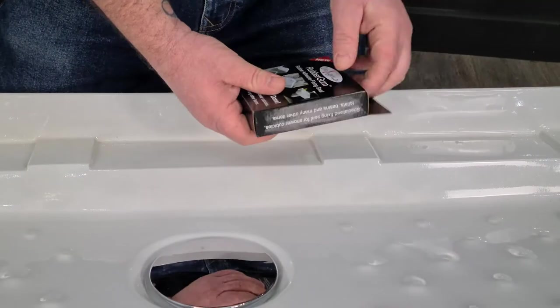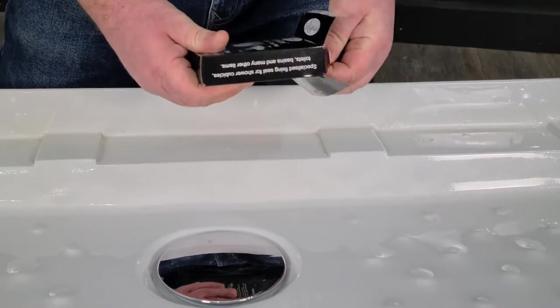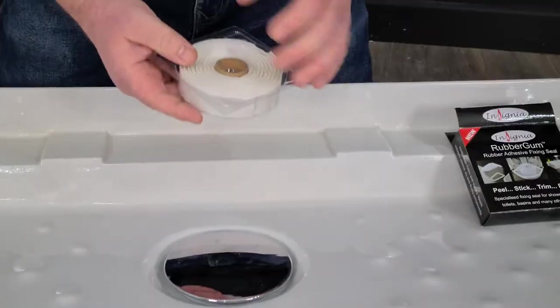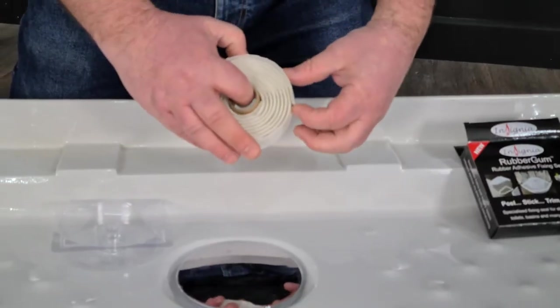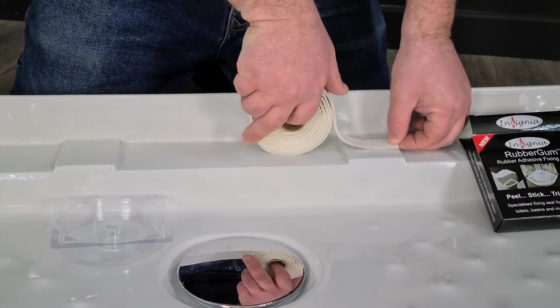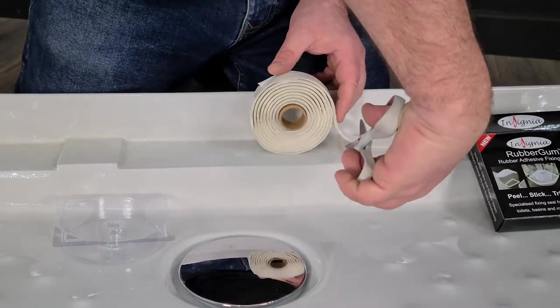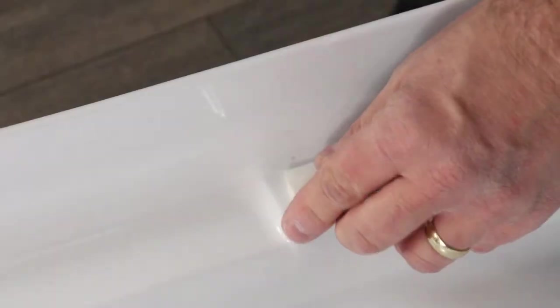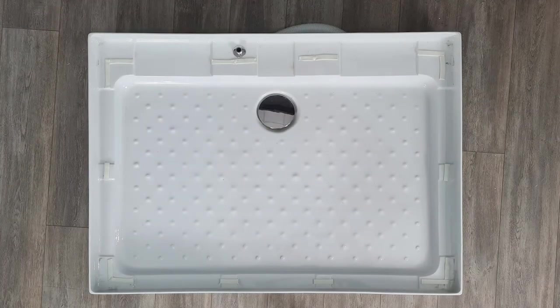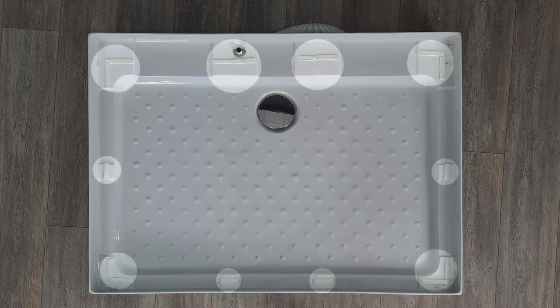To apply the rubber gum, firstly open the rubber gum and trim off the required amount for the raised sections of the tray. You can use a knife or if you find it easier, scissors. Place rubber gum face down on the raised sections then remove the greaseproof paper and you're done. It's as easy as that.